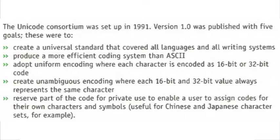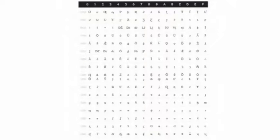The Unicode Consortium was set up in 1991. Version 1.0 was published with 5 goals. A sample of Unicode characters are shown in this figure. As can be seen from the figure, characters used in languages such as Russian, Romanian, and Croatian can now be represented in a computer.